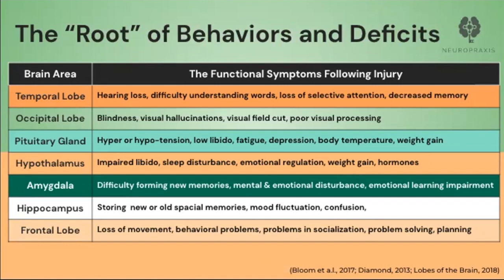Damage to the pituitary gland can result in blood pressure issues, low desire for sex, low energy, constant feeling of sadness, drastic changes in body temperature, or fluctuations in weight. Damage to the hypothalamus can also lead to low desire for sex, insomnia or inability to achieve adequate sleep, weight gain, and issues in hormone balance. Injury to the amygdala can lead to emotional disturbances such as anger outbursts, extreme feelings of fear, worry, and extreme overreaction to non-threatening experiences.